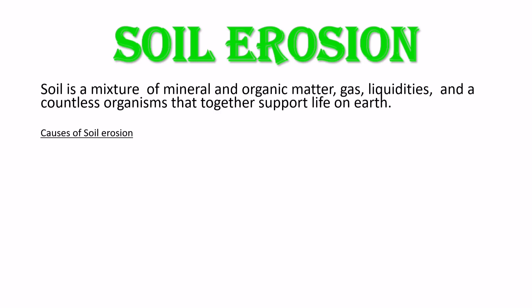Soil erosion involves the wearing away of soil, which is a mixture of minerals and organic matter. Causes of soil erosion include wind, water, overgrazing, and deforestation.